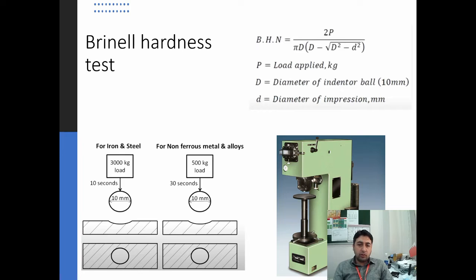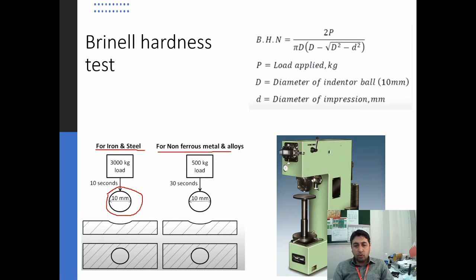The Brinell hardness test uses a ball indenter of 10 millimeter diameter. When used for iron and steel, we apply a load of 3000 kilograms for 10 seconds. For ferrous metals and their alloys, we use the same 10 millimeter ball indenter for 30 seconds but with a lower load of 500 kilograms. Once we make the dent, we measure the diameter and put it into the formula to find the Brinell hardness number.